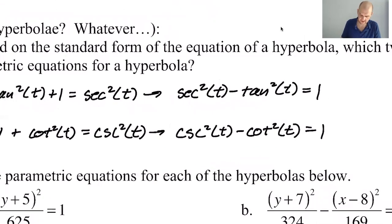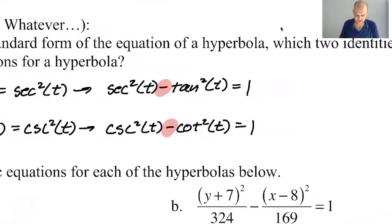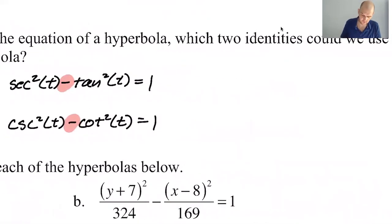So this is an important warning. Because of the minus, you cannot just switch secant and tan. You can't just switch cosecant and cotan, because secant minus tan does not equal tangent minus secant. On the other hand, for sine and cosine, you can just swap them because sine squared plus cosine squared equals cosine squared plus sine squared. So you cannot just switch them. Watch out for that.